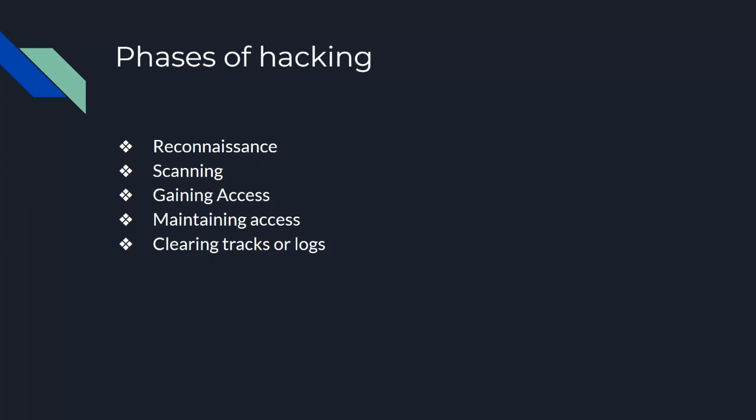Phase 1 is Reconnaissance, also known as information gathering or footprinting. In the first phase, you find information about your target — what is their organization, what is the target. In this phase, we gather information. You will find information in the first phase.